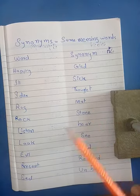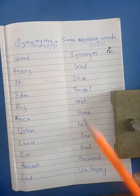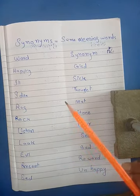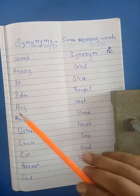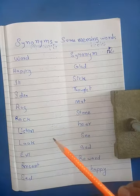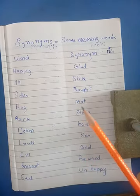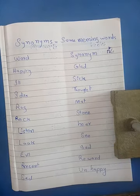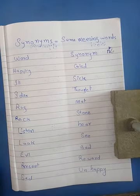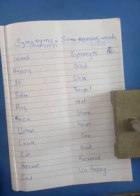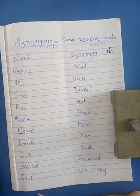Idea — idea کا synonym ہے thought، مطلب خیال آنا۔ ان دونوں کی meaning ہم same ہی لیں گے۔ Rug — rug کا synonym ہے mat۔ ان دونوں کا مطلب ہے چھوٹا کارپیٹ جو ہم زمین پہ بچھاتے ہیں، ایک بچھونا۔